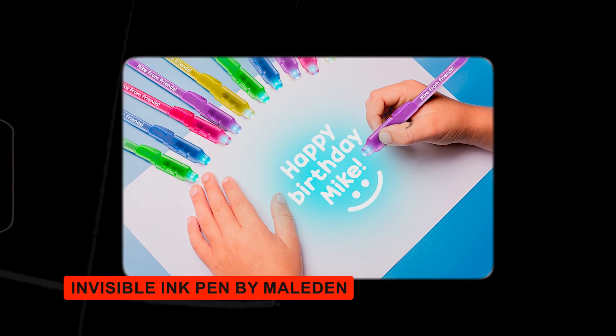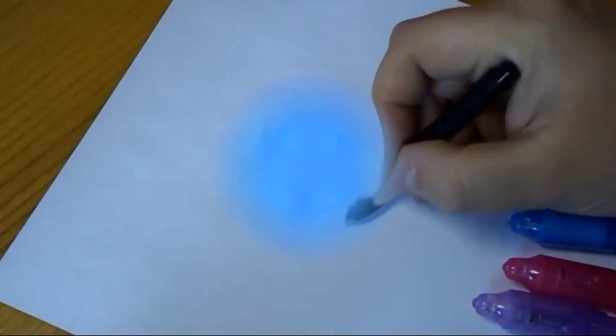Invisible Ink Pen by Malden. Write secret messages that only appear under UV light with this fun and affordable invisible ink pen. Great for sending private notes or keeping your journal entries confidential.